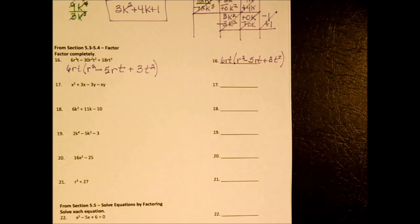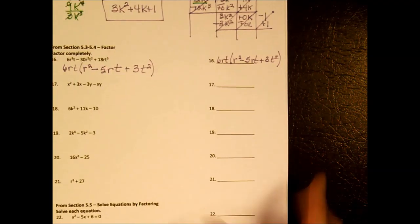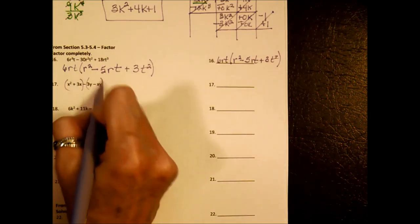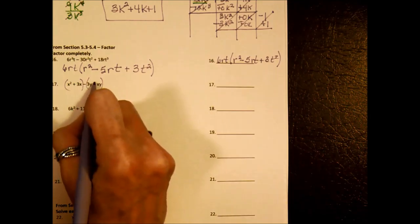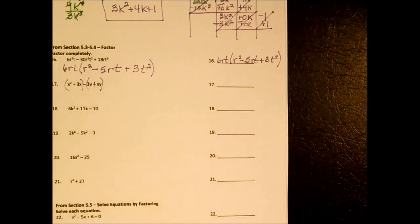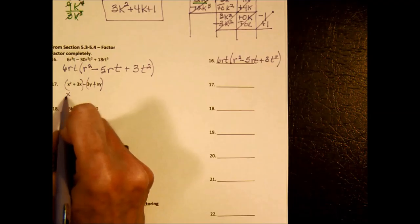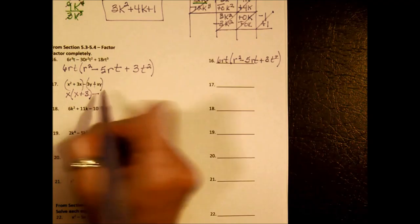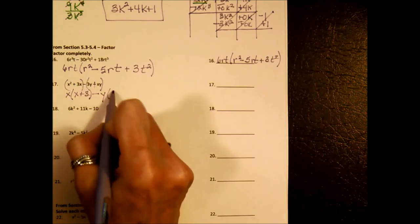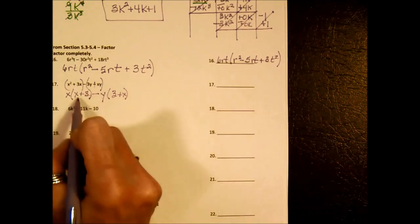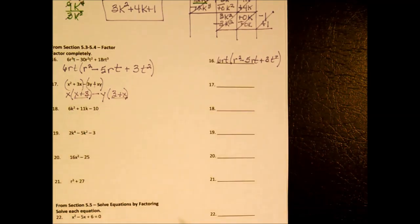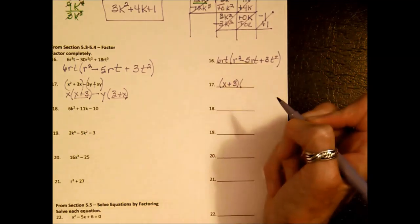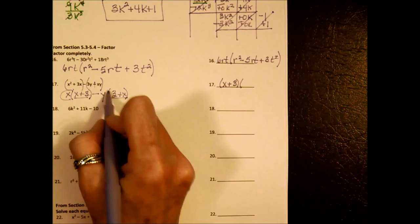The next one has 4 terms — that means factor by grouping. The GCF of the first binomial is X, leaving (X plus 3). Bring down the minus sign. The GCF of the second binomial is Y, leaving (3 plus X). These two binomials are the same, so the first factor is (X plus 3) and the second factor is (X minus Y).